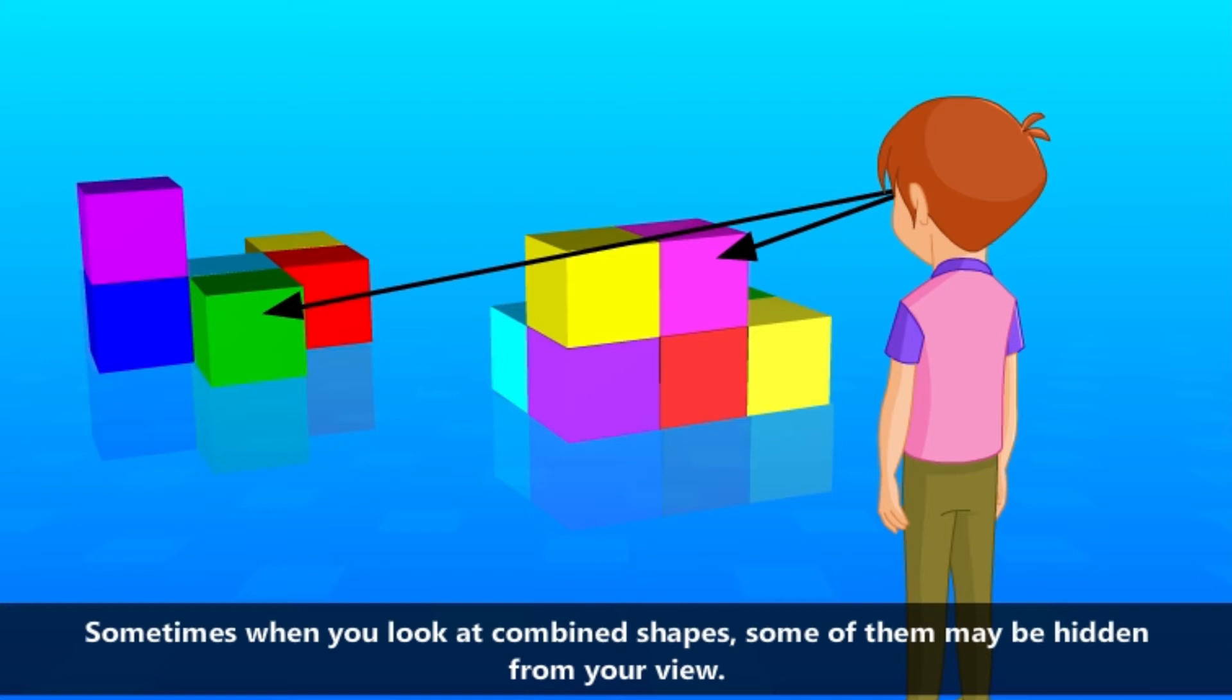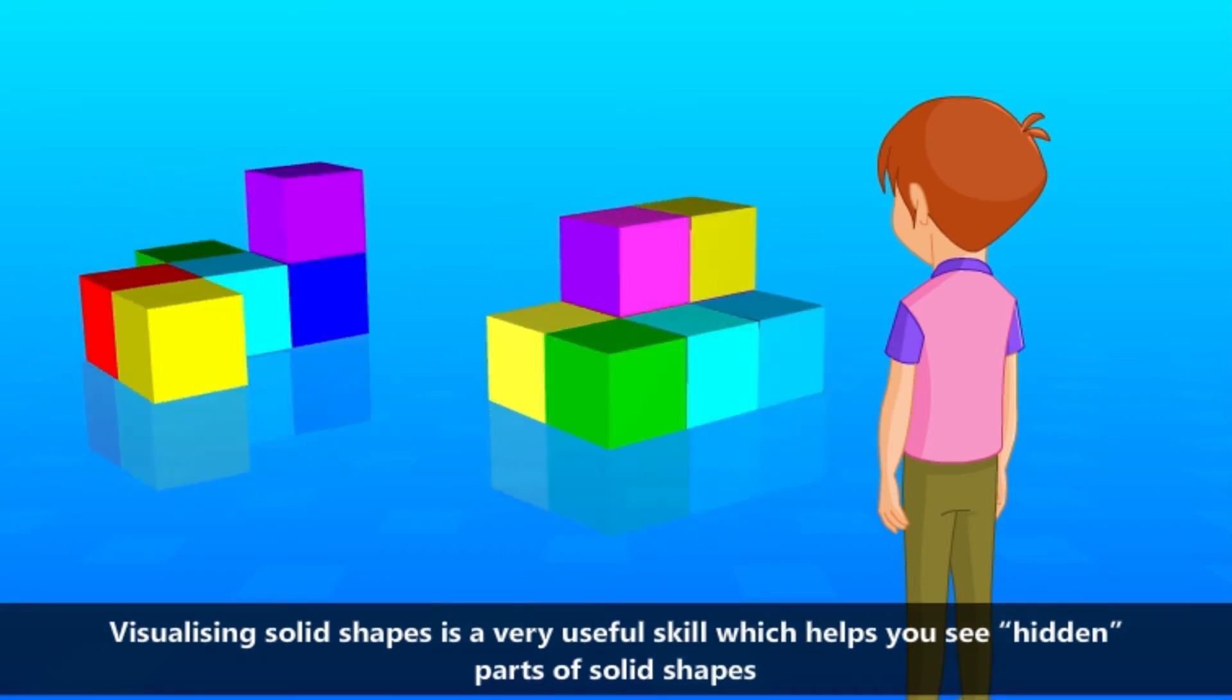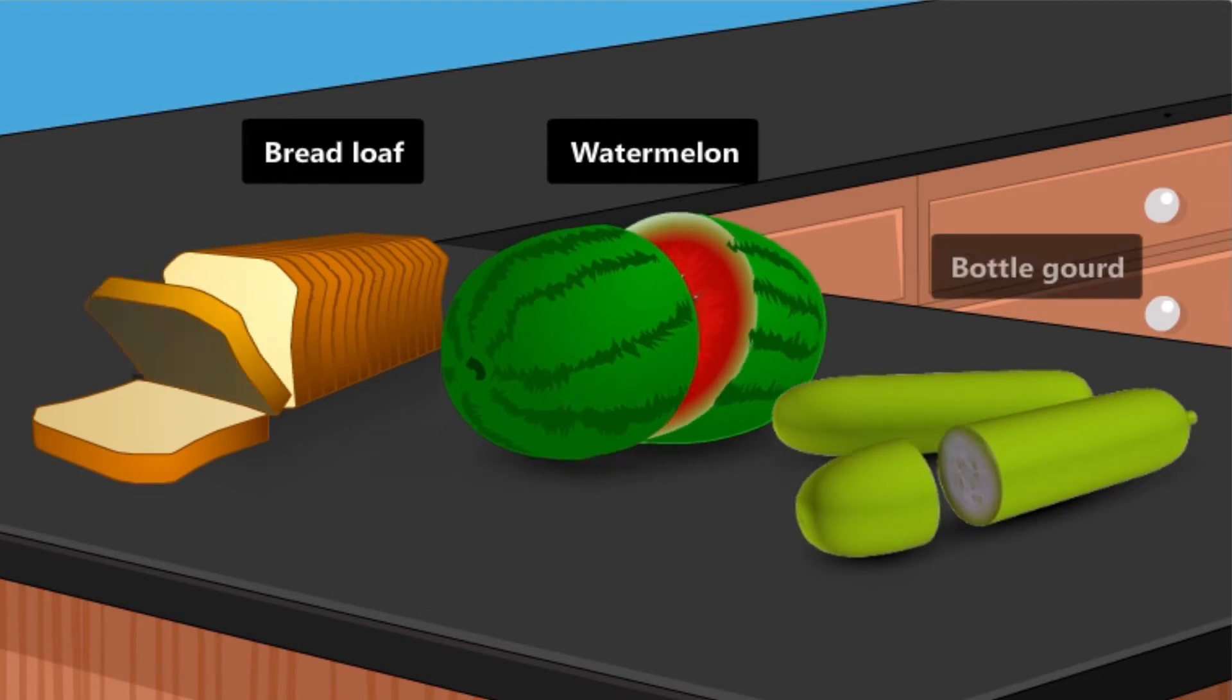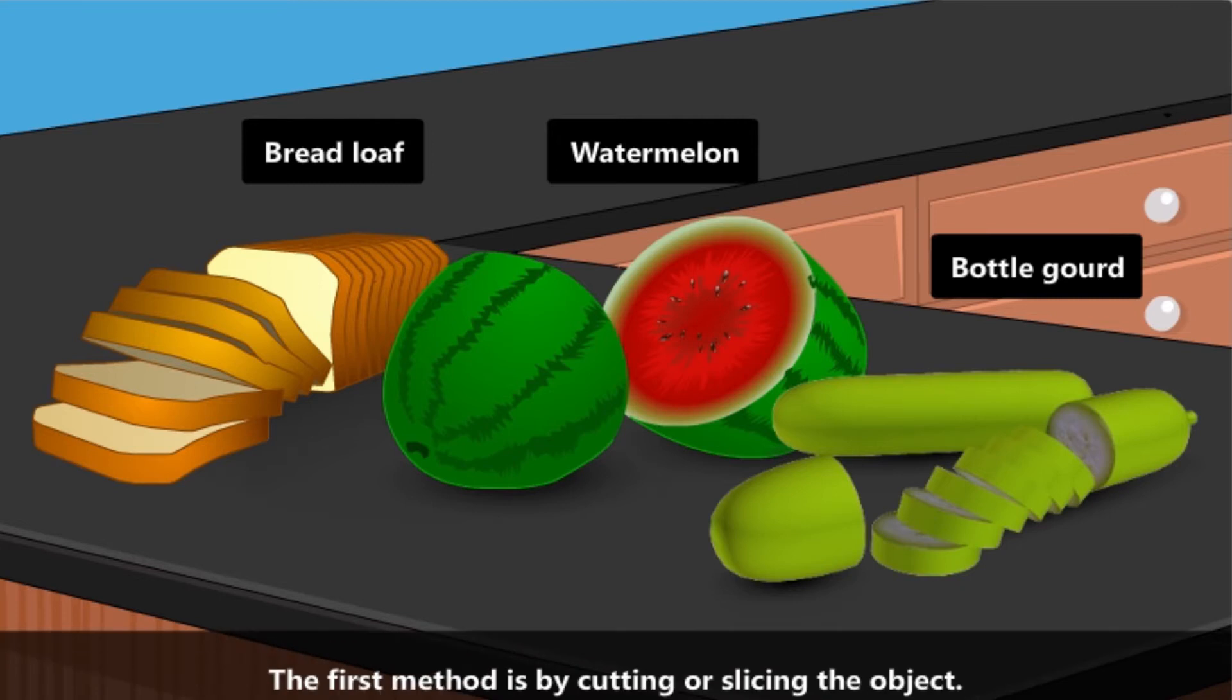Some shapes may be hidden from your view, so we need to develop the skill of visualizing solid shapes, which helps us see hidden parts of solid shapes. There are different ways to view a 3D object. We will now see some methods to do so.